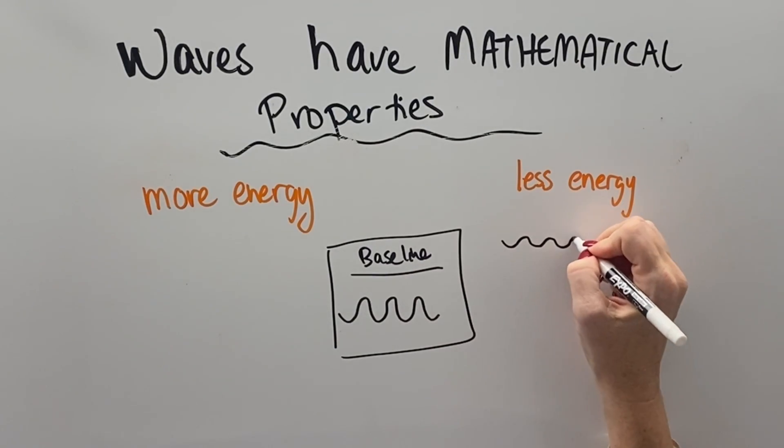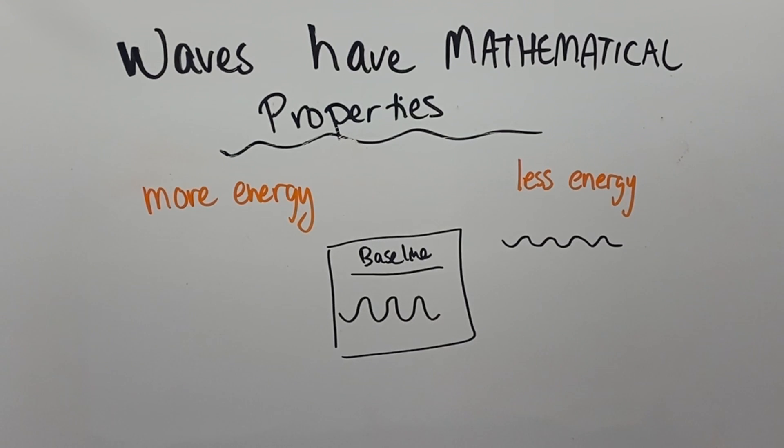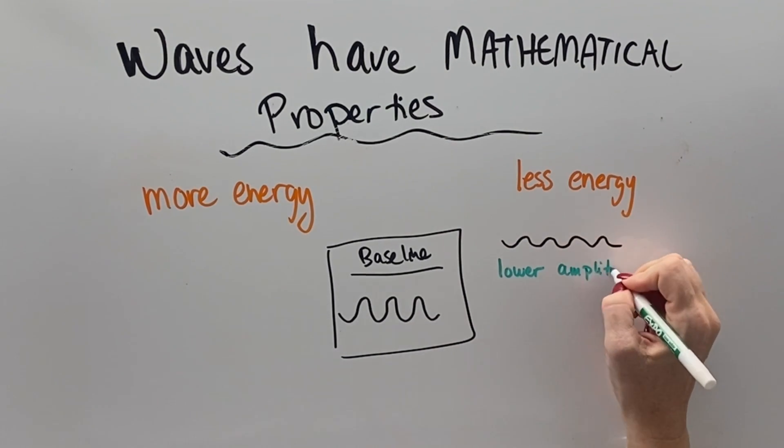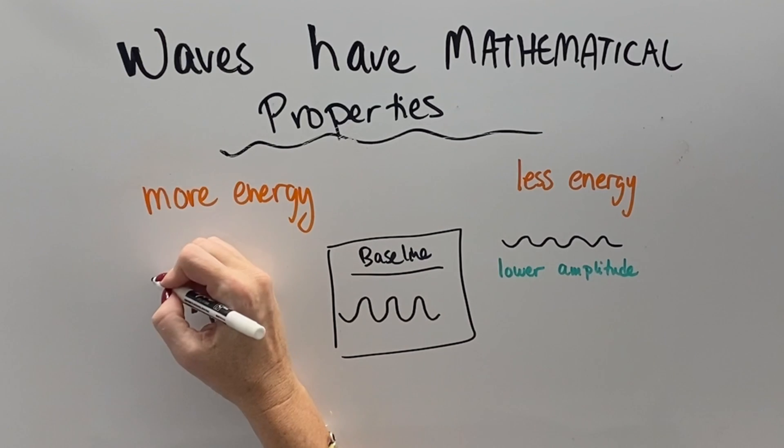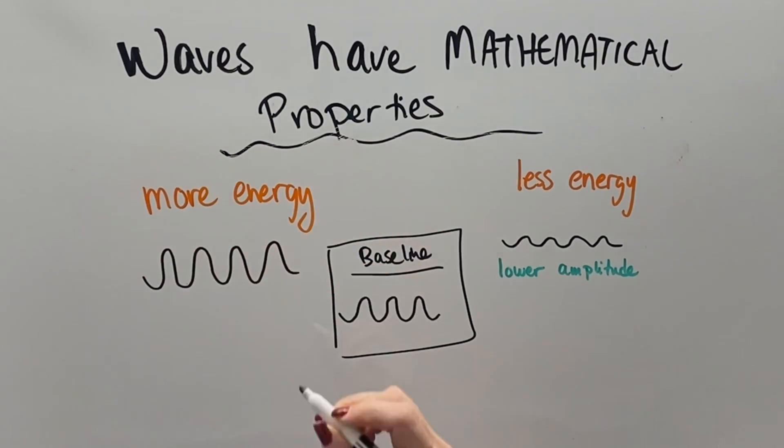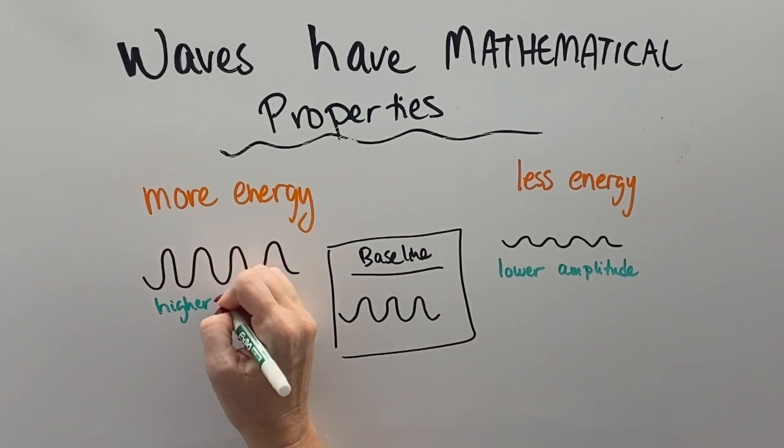And so when we look at the amount of energy contained in a wave, if we have a baseline wave, then a lower amplitude wave or a quieter sound has less energy.